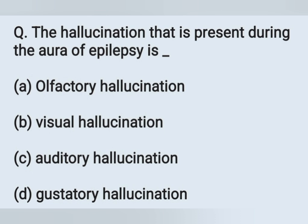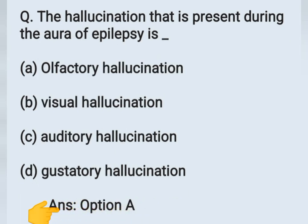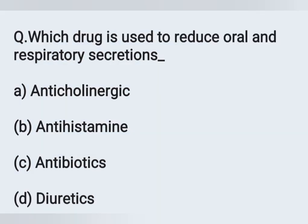The next question: The hallucination present during the aura of epilepsy is — Option A: olfactory hallucination, Option B: visual hallucination, Option C: auditory hallucination, Option D: gustatory hallucination. The type of hallucination present during the aura of epilepsy is olfactory hallucination. Option A is the correct answer.